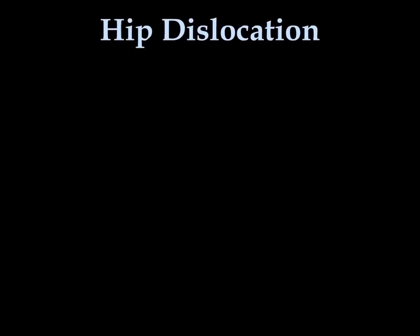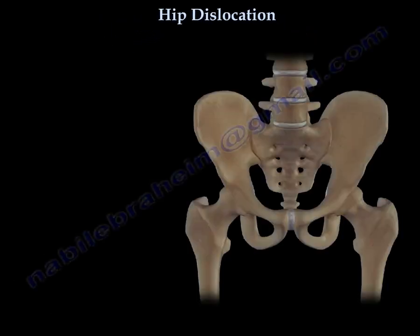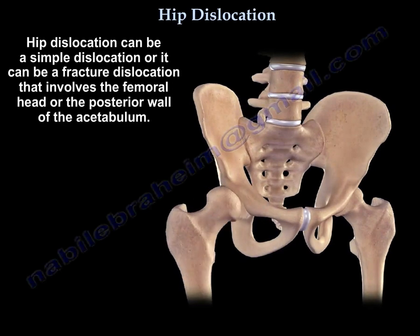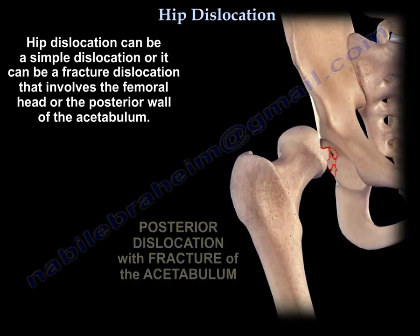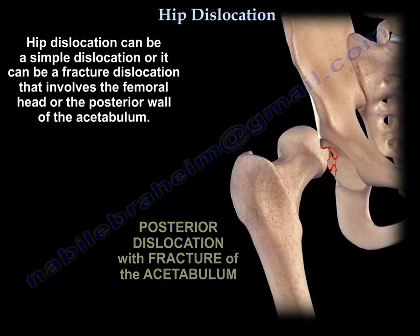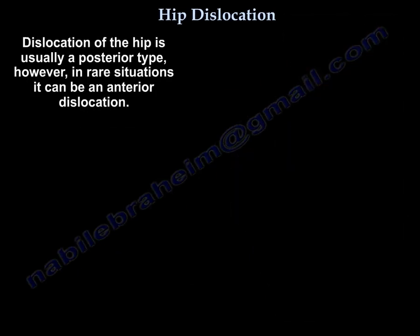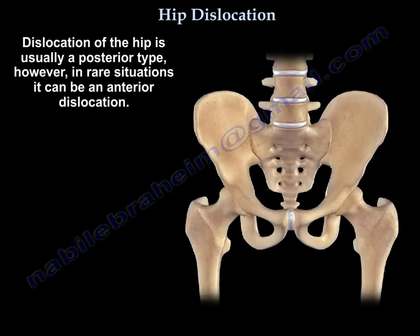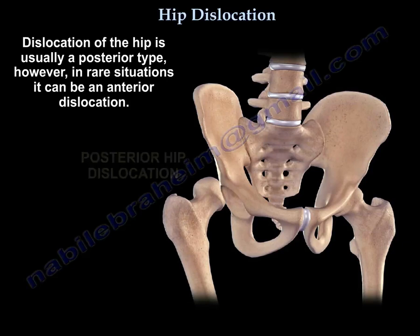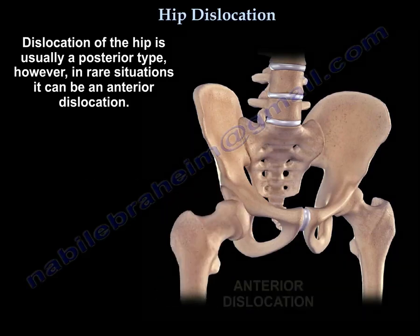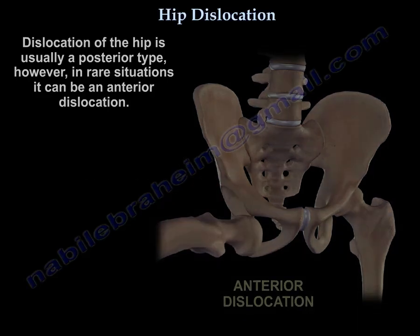Hip dislocation can be a simple dislocation or a fractured dislocation involving the femoral head or the posterior wall of the acetabulum. Dislocation of the hip is usually a posterior type; however, on rare occasions it can be an anterior dislocation.